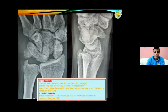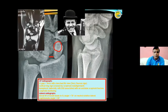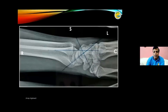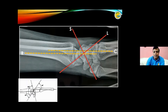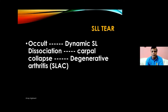On the AP radiograph, there is a gap between the scaphoid and lunate — the Terry Thomas sign — and a cortical ring sign. These can be confirmed on MRI. On the lateral view, you can draw the axes and find the scapholunate angle is more than 60 degrees. A scapholunate ligament tear can present as occult or dynamic scapholunate dissociation, then progress to carpal collapse, and ultimately to SLAC wrist.